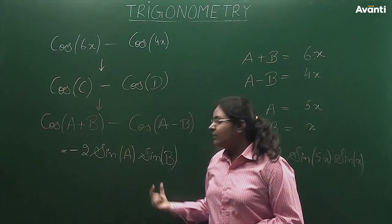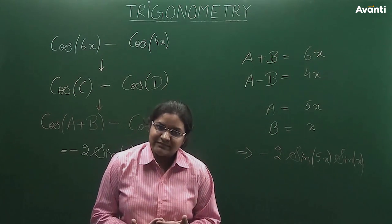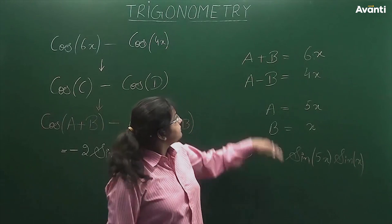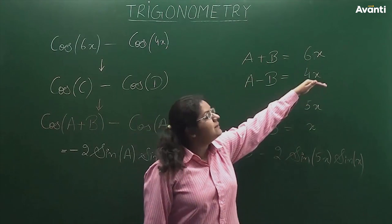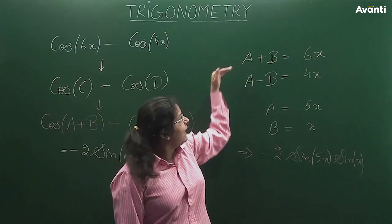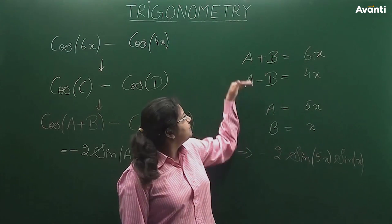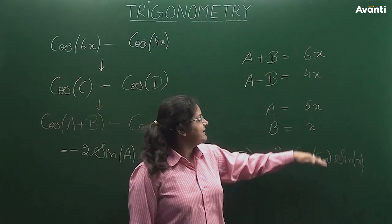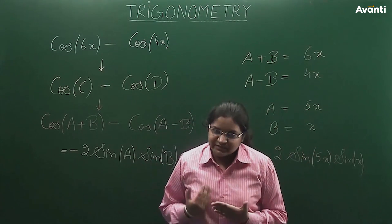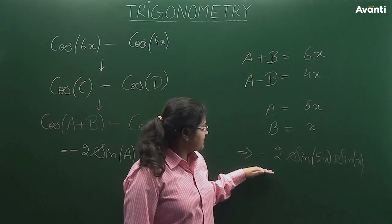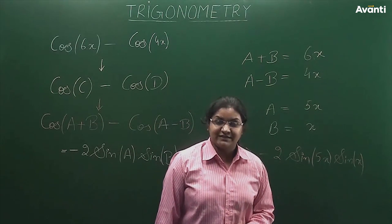I need to find the values of a and b. The procedure is the same as before: a+b equals 6x, and a−b equals 4x. Adding both gives a equals 5x, and subtracting gives b equals x. Substituting these values, the expression becomes minus 2 times sine of 5x times sine of x.